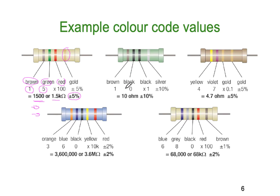The next one along is brown, black, and black. So it's 1, 0, giving us 10. The multiplier is ×1, so 10 times 1 is 10. Our tolerance is plus or minus 10%. So this resistor is 10 ohms plus or minus 10%.